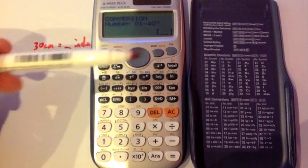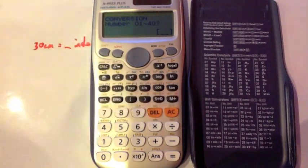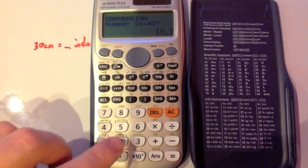And then it'll prompt you for which conversion you want. So we want number 002. So we're going to press 0 and then 2. There's no need to press equals, just press 0 and then 2.